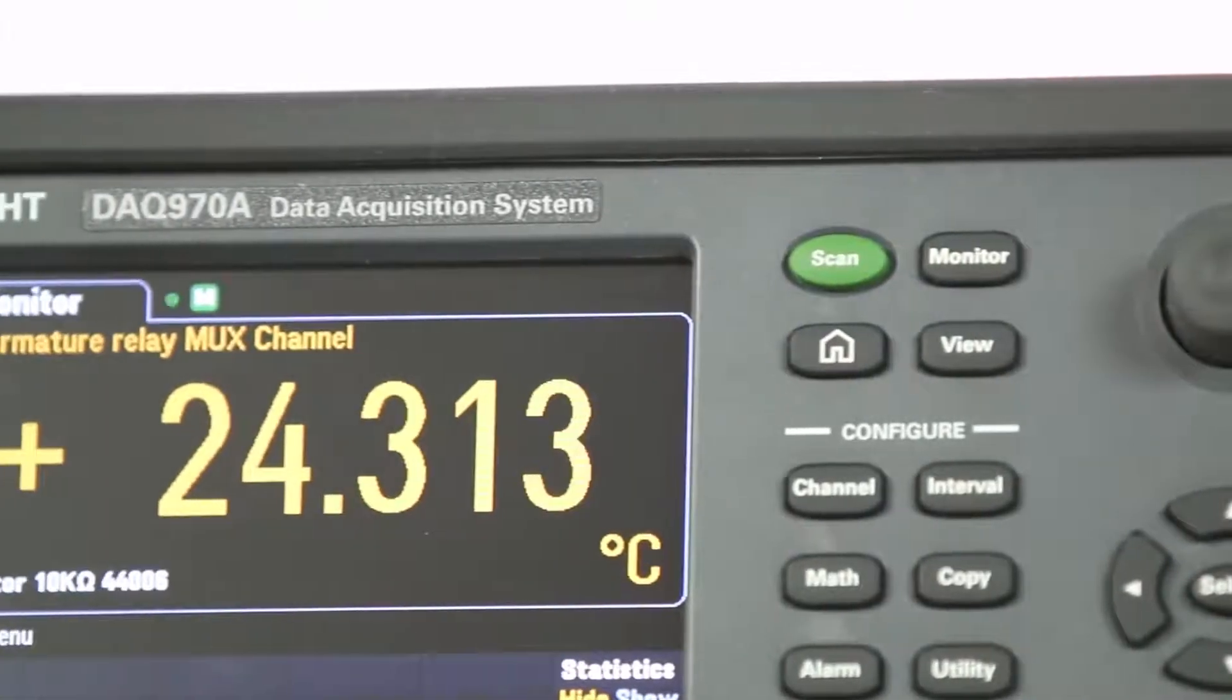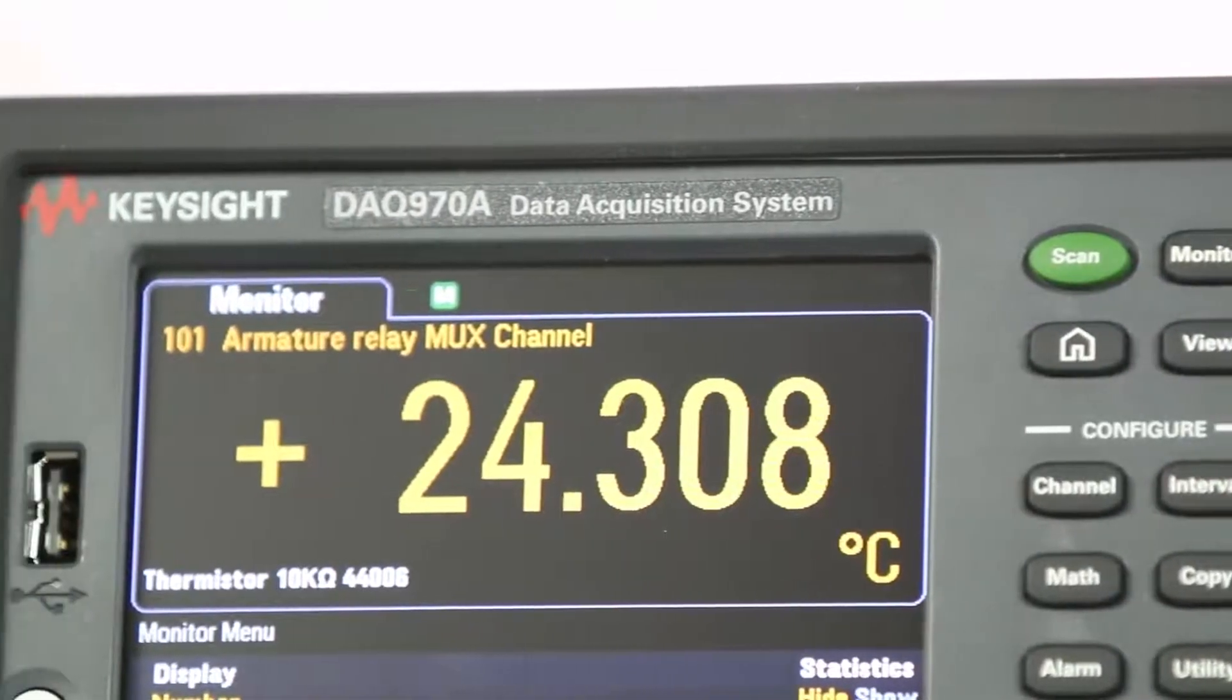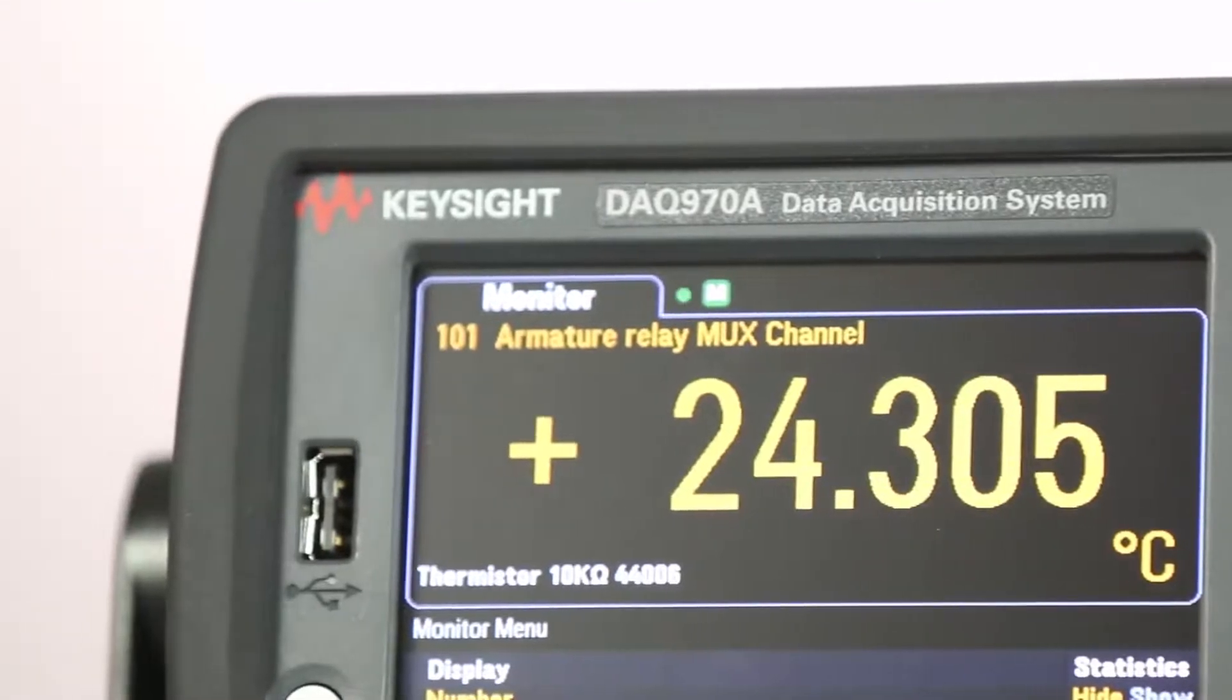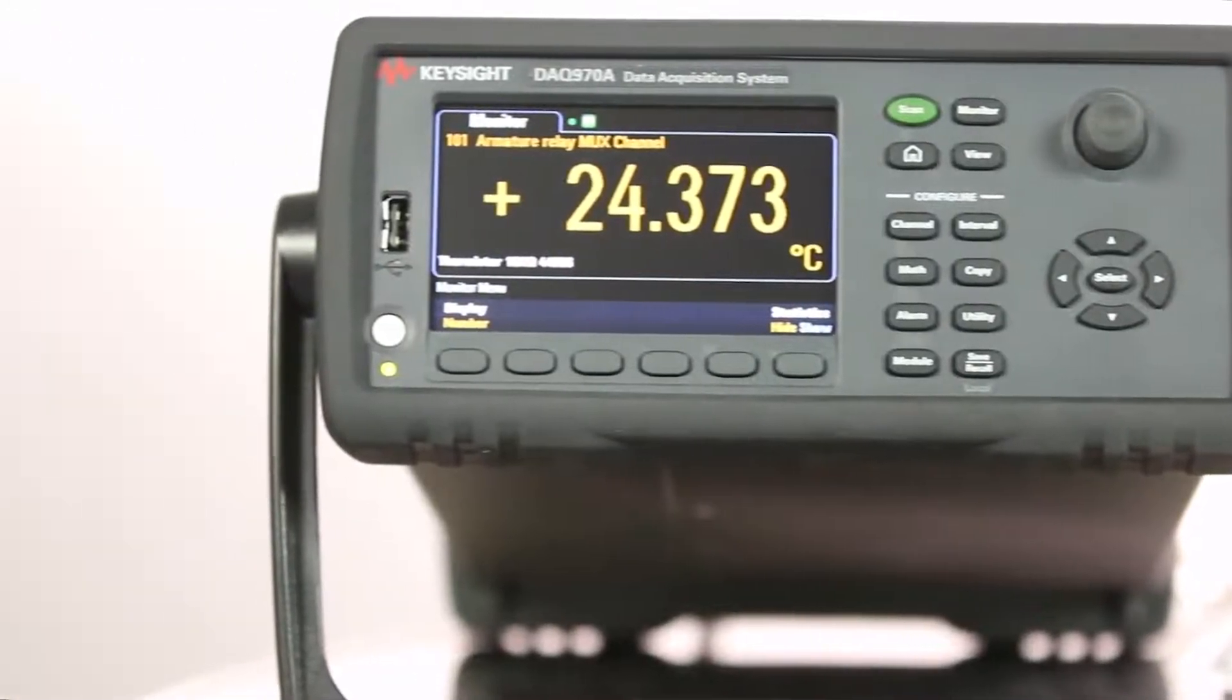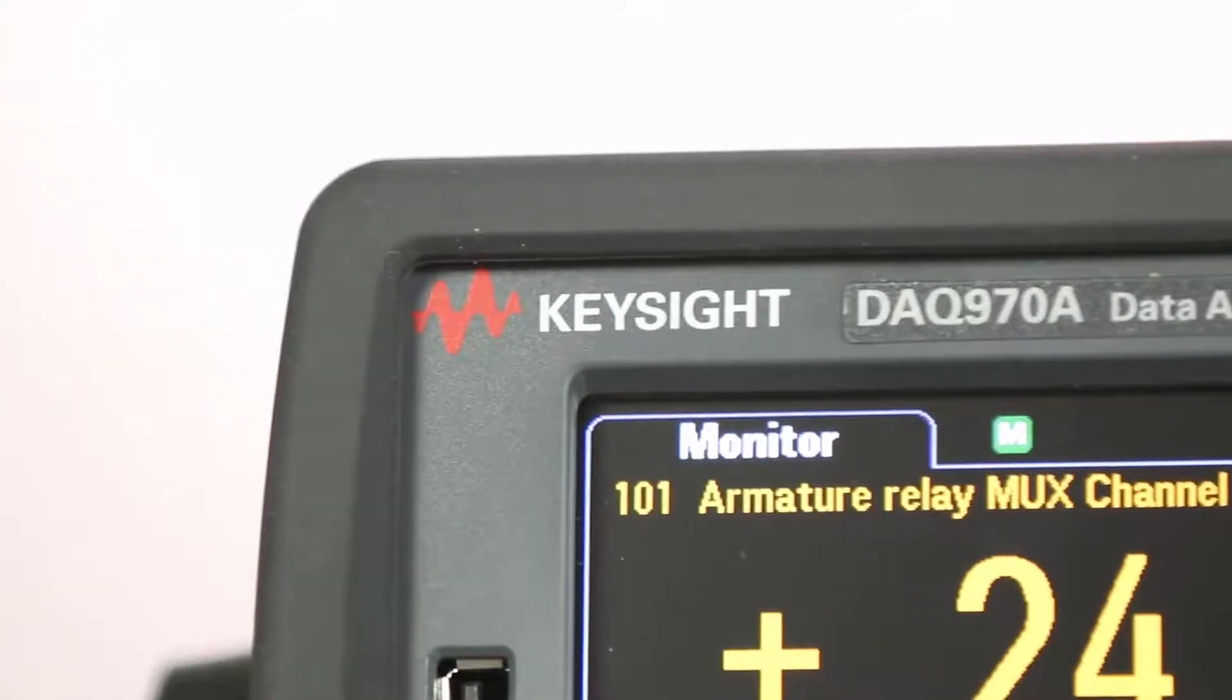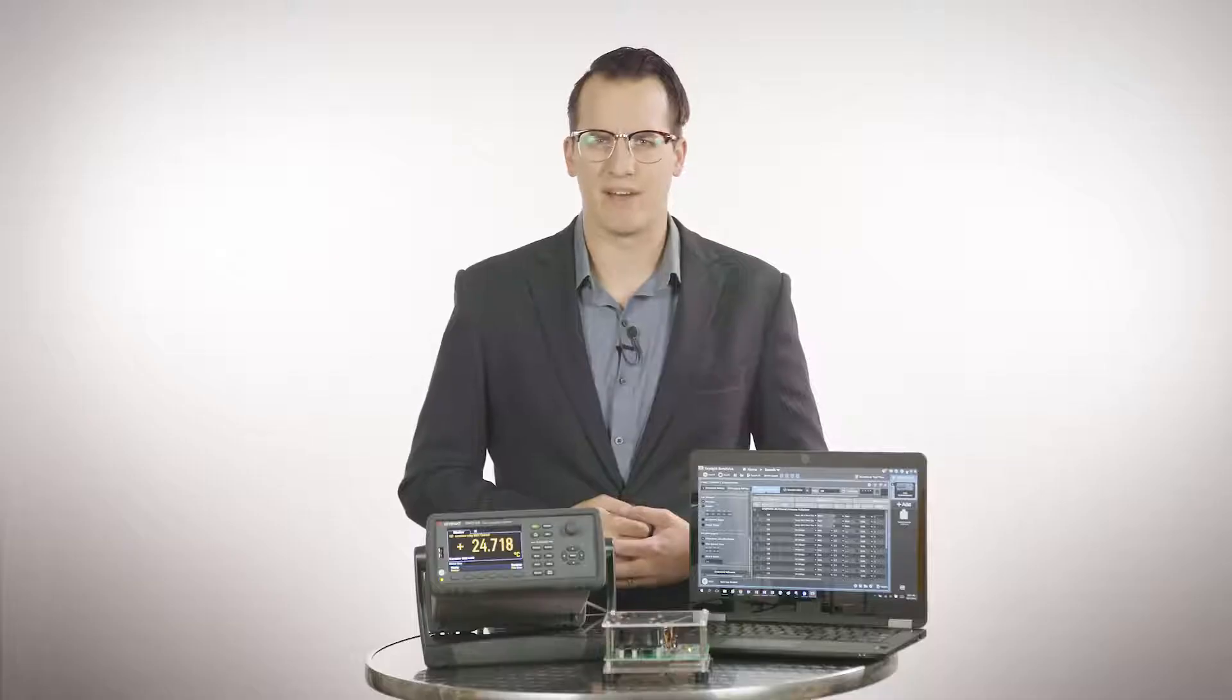This generation, the DAC 970A, builds on the proven design of the 34970A and 34972A. The DAC 970A mainframe has a built-in advanced six and a half digit DMM and signal conditioning that speeds up test development time.